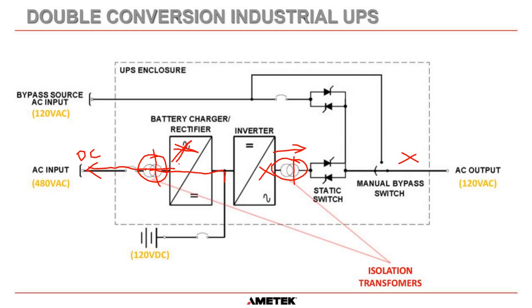This isolation transformer gives us isolation between the DC and the AC — there is no possible way DC can pass through it. That's inherent in its design. It is very, very important in the industrial world that you have a UPS with isolation transformers, and it's usually specified by most petrochemical and power plants anyway.